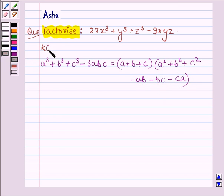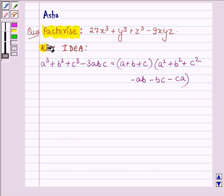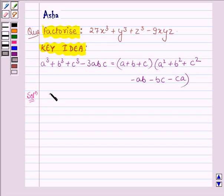With the help of this identity, we will factorize the given problem. This is our key idea. Let us now start with the solution. We have to factorize 27x cube plus y cube plus z cube minus 9xyz.